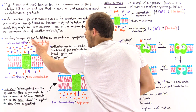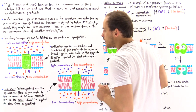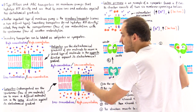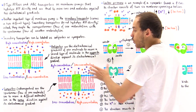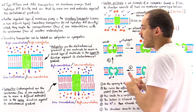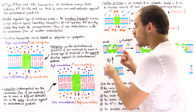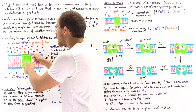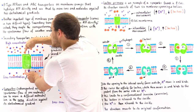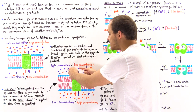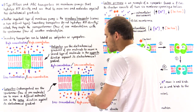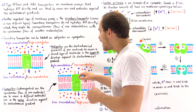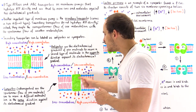But now we have a high concentration of orange molecules on the inside and a low concentration on the outside. Because of this reversal, the orange arrow points in the opposite direction compared to the previous case, which happens to be the same direction as the purple arrow.